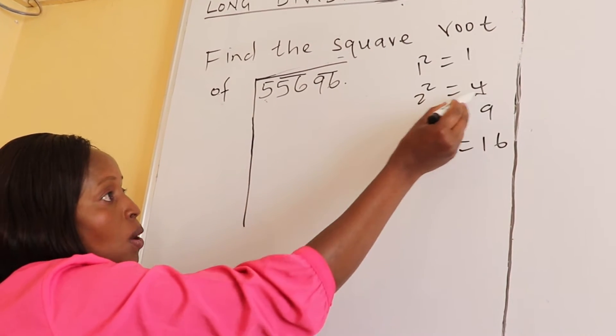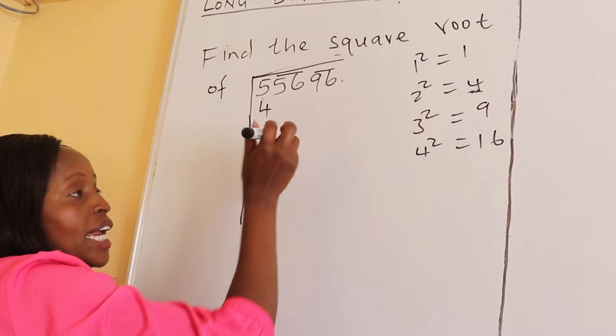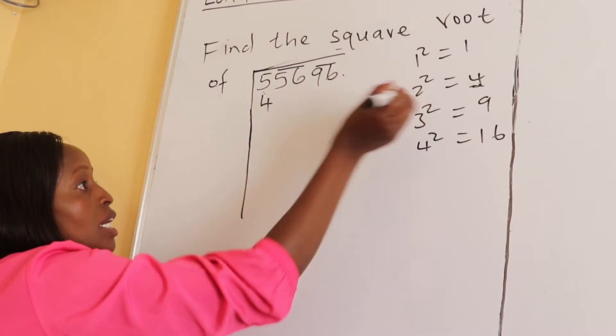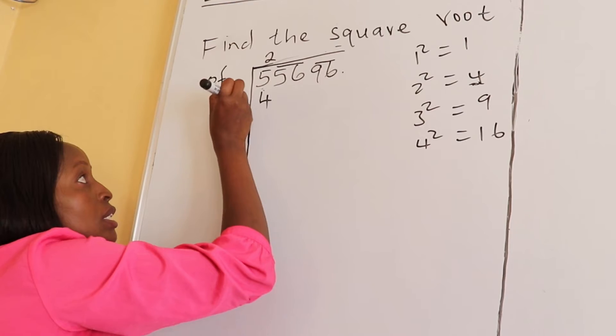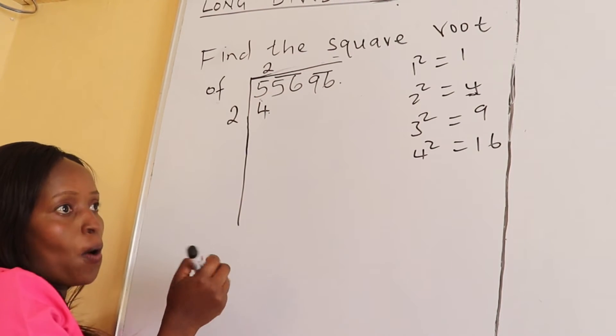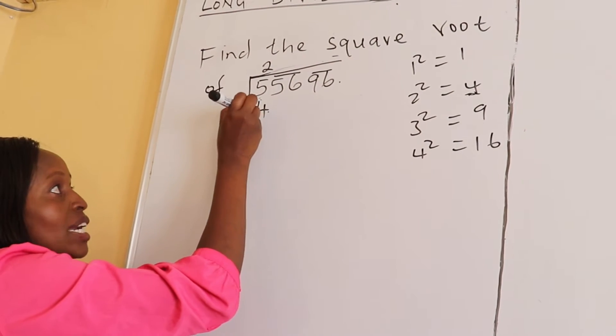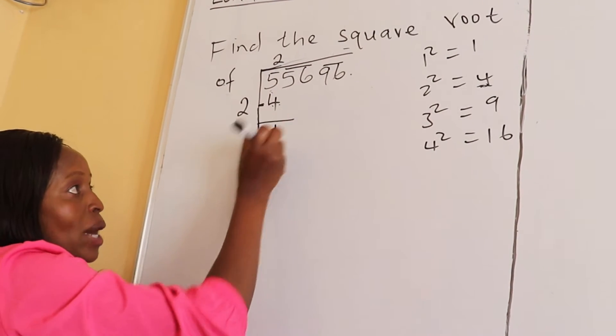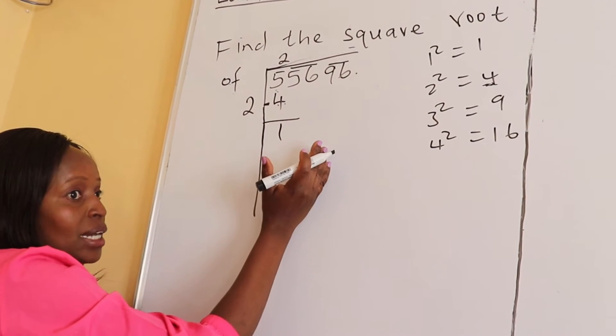Which perfect square is near 5? It's 4. And which digit when we squared gives us 4? It's 2. So 2 times 2 gives us 4.